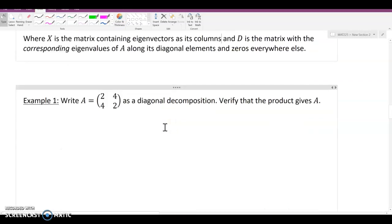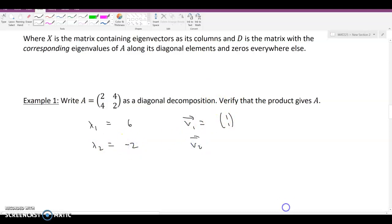So let's see how this works. A is the matrix 2, 4, 4, 2. Write this as a diagonal decomposition. So we need to know what the lambdas are. We know that this is 6. V1 was the vector 1, 1 that we chose. This is not a unique decomposition. It all depends on what values you pick to put in your eigenvector. This is negative 2. V2 is the vector negative 1, 1.